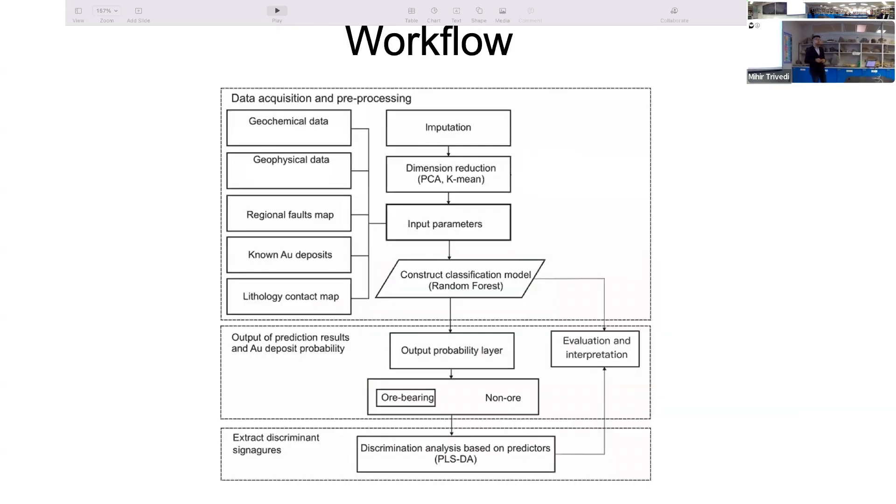This is one of the most important slides of this presentation. It explains the workflow of this research. The initial phase is data acquisition and pre-processing. We have used geochemical, geophysical data, regional faults, and known gold deposits. We performed imputation with the help of translators and geological experts who replaced missing data with values using their knowledge and expertise. Then we used principal component analysis for dimension reduction and constructed the classification model where we implemented Random Forest.